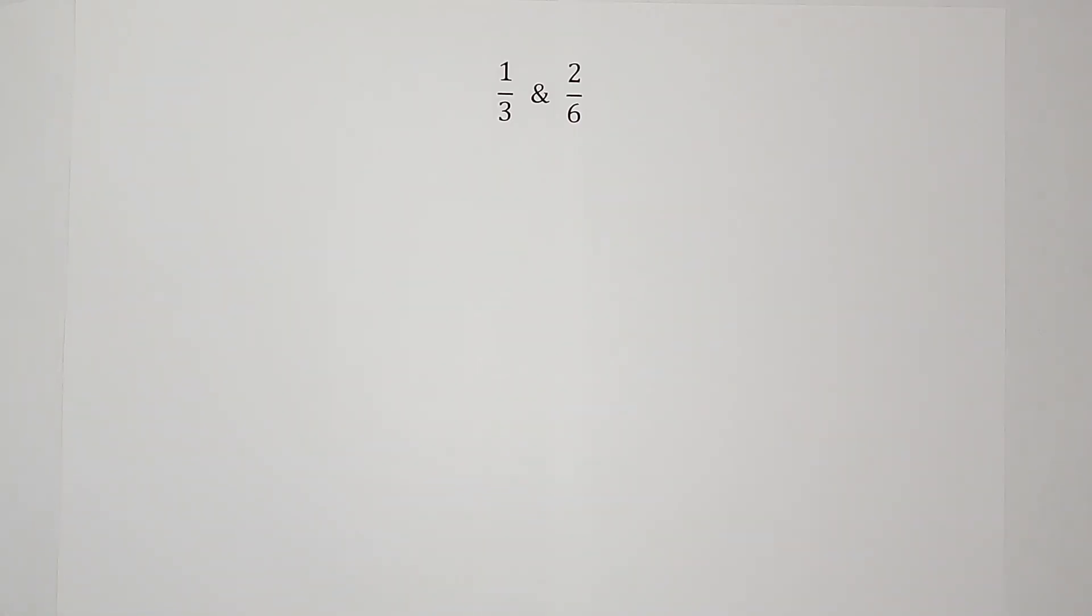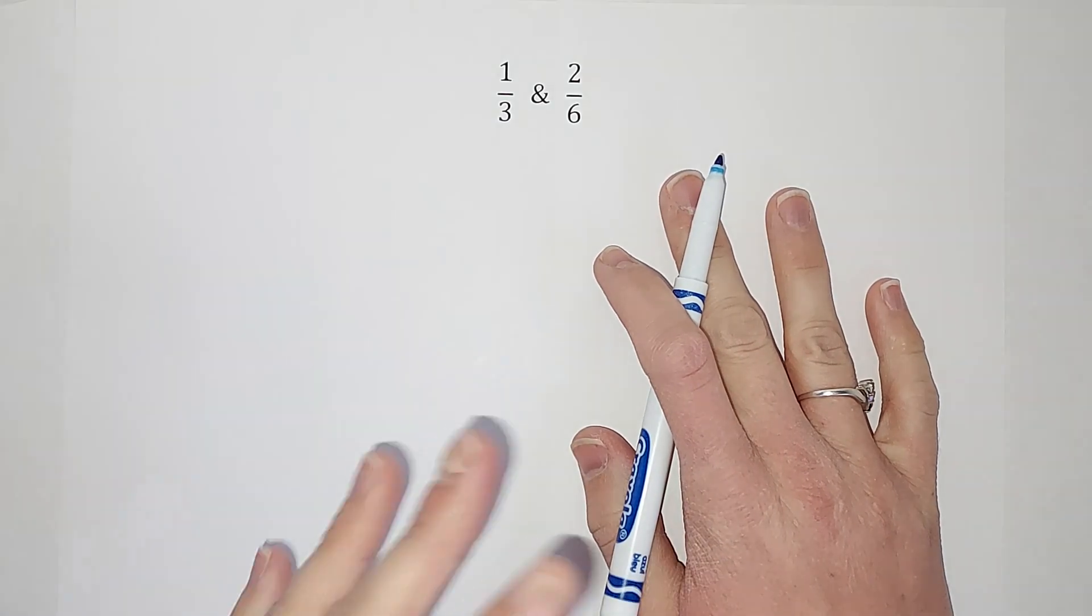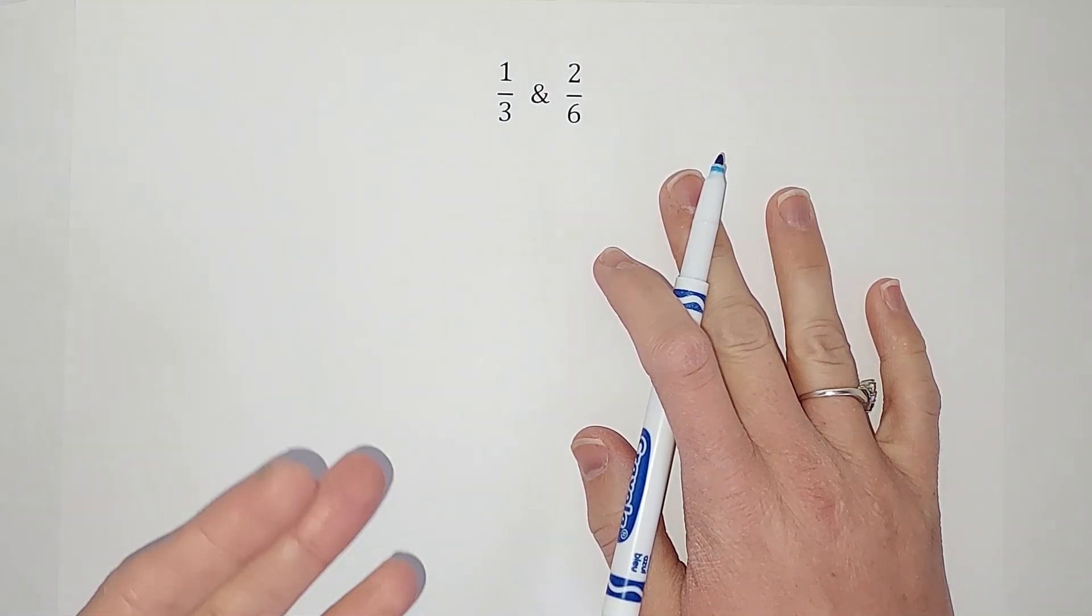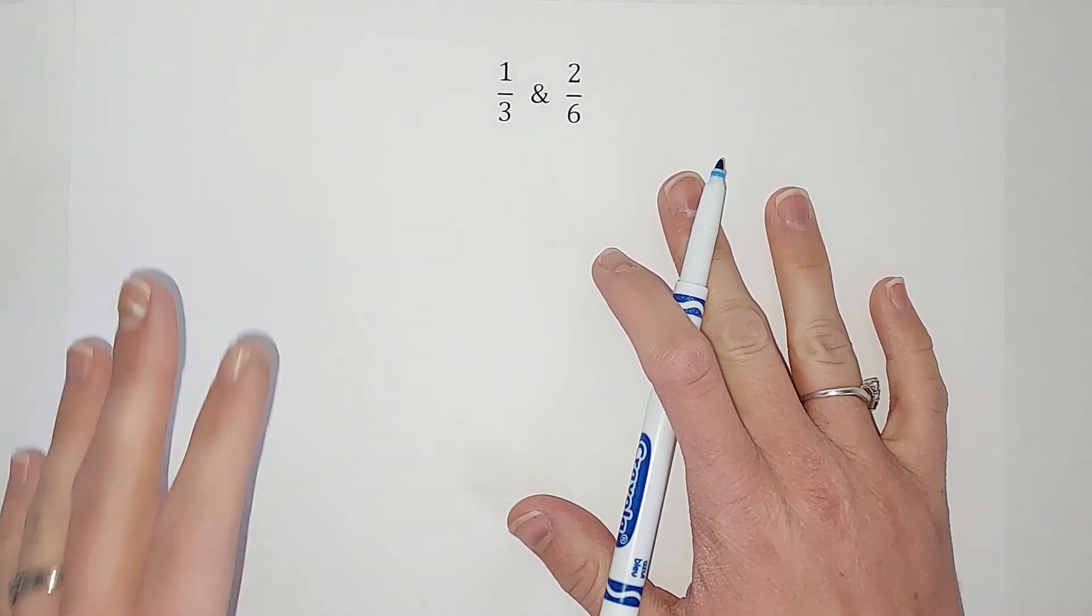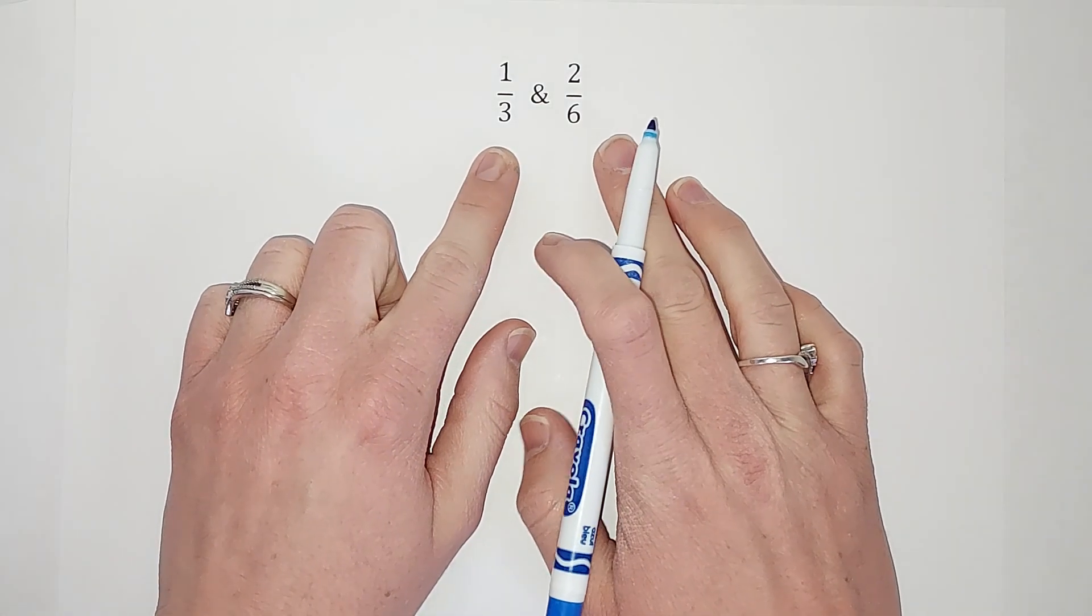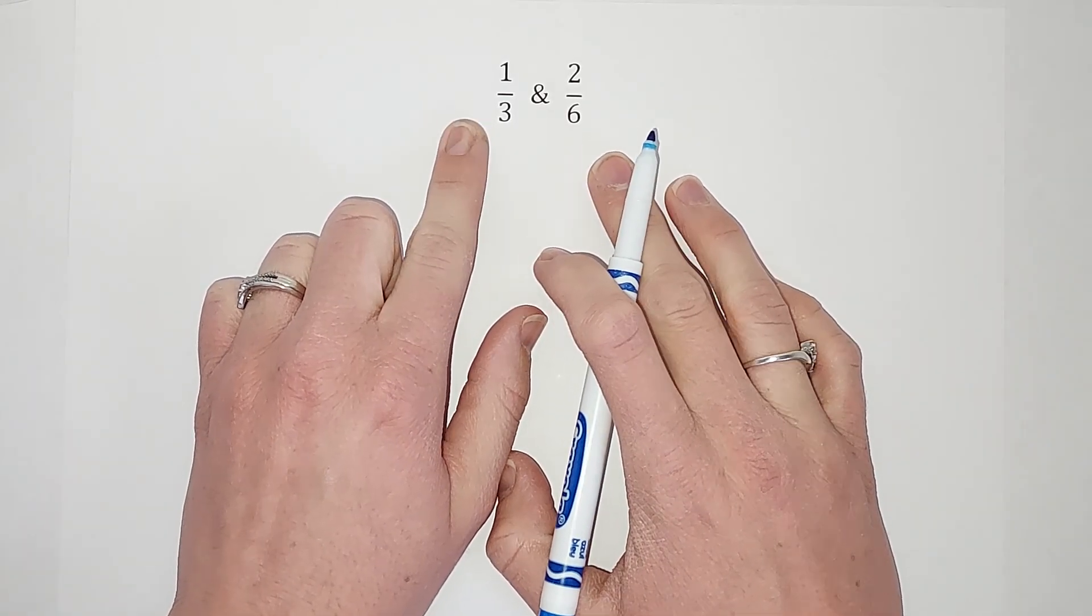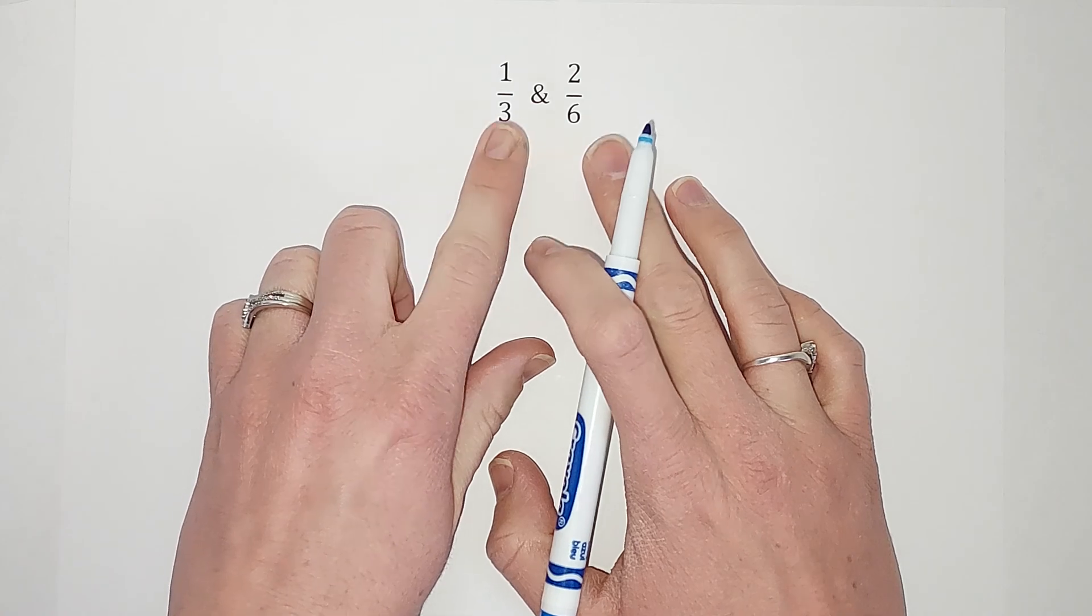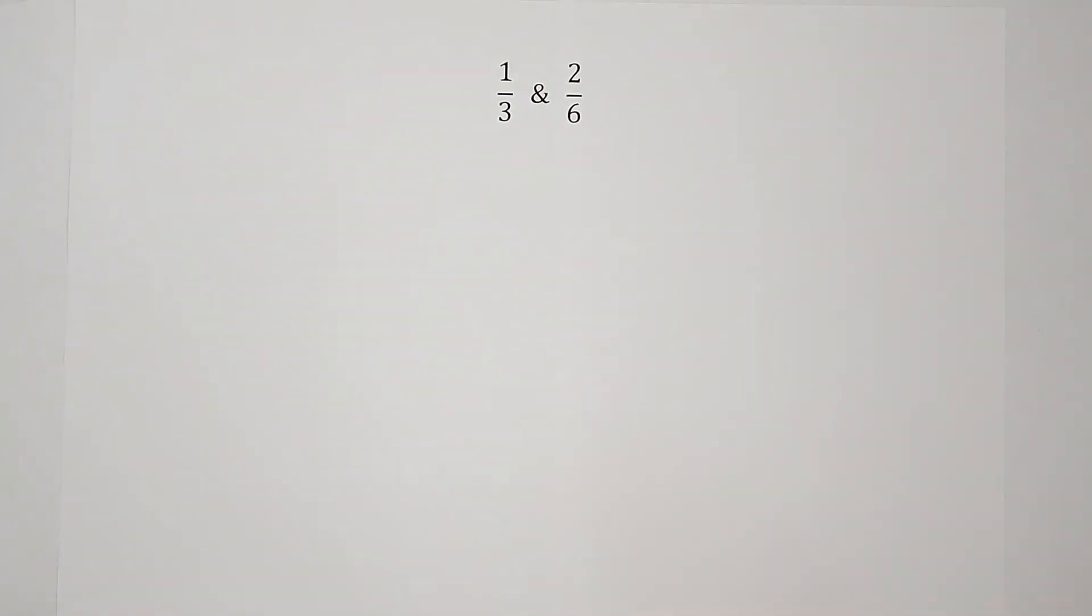Another way I could see if these were proportional would be to get their denominators the same. If I get their denominators the same and the numerators are the same, they're the same fraction, so they're proportional. Normally, if I were to get the denominators the same to compare these, I would just multiply this side by two over two so that both denominators were six. That would be the most efficient way to do it, but in order to show why cross products work, we're going to do it a little bit differently.